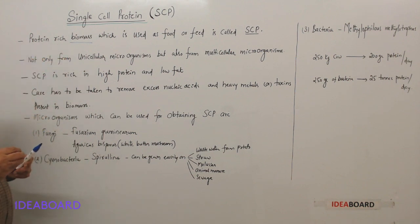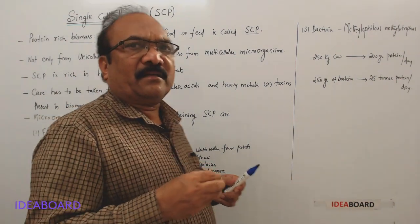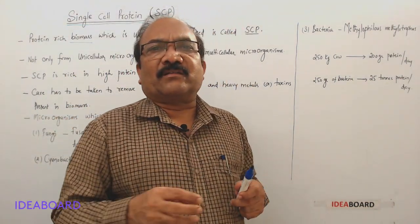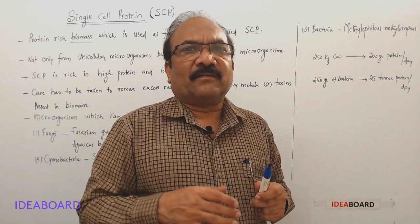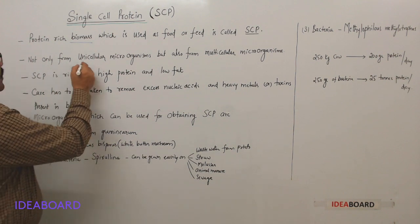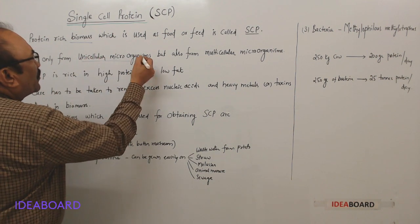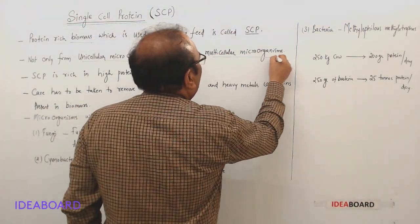When we talk about SCP, immediately we think that it is obtained only from unicellular organisms or from single cells. Not at all like that. Actually it is not only obtained from unicellular microorganisms but is also obtained from multicellular microorganisms.